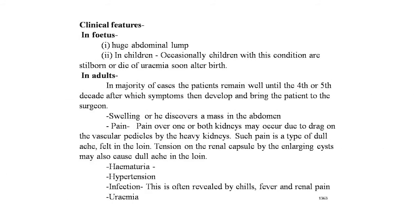Clinical features: in the fetus, a huge abdominal lump may be so great as to make normal delivery almost impossible. In children, they may be stillborn or die of uremia soon after birth. In adults, the majority remain well until the 4th or 5th decade, after which symptoms develop. These include swelling or discovery of a mass in the abdomen, pain over one or both kidneys due to drag on vascular pedicles by heavy kidneys — a dull ache in the loin — tension on the renal capsule by enlarging cysts, hematuria, hypertension, infection revealed by chills, fever and renal pain, and uremia.